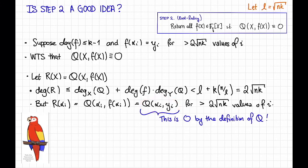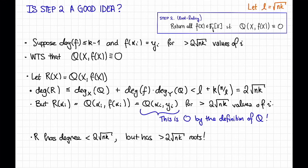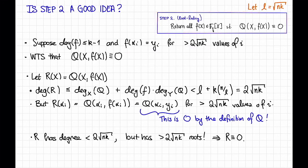Since low-degree polynomials don't have too many roots, we have a polynomial r of degree less than 2 times the square root of nk, yet it has greater than 2 times the square root of nk roots. That implies r must be identically equal to zero. This shows why step two is a good idea: if f agrees with y enough, then in step two we're going to return it.